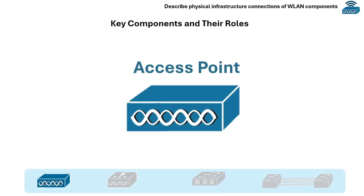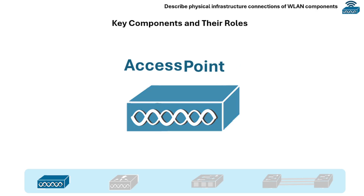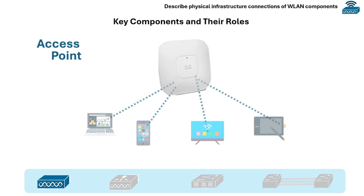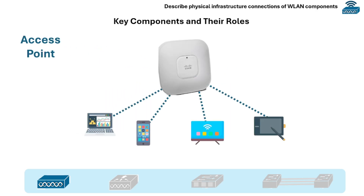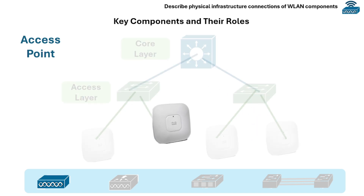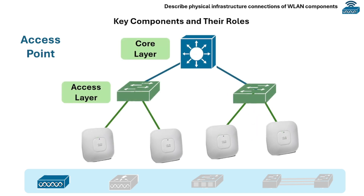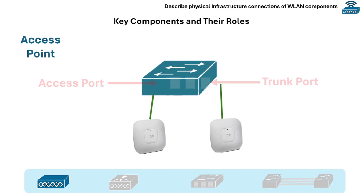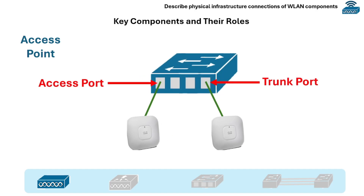Starting with the access point. An access point's role is to provide wireless connectivity to end-user devices. APs are usually connected to access layer switches via Ethernet. The connection can be an access port or a trunk port, depending on the wireless LAN requirements.